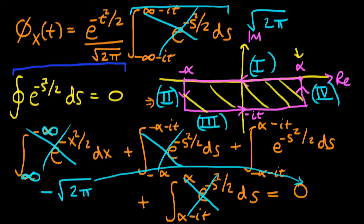After the two root 2π terms cancel, we get what we set out to prove: namely that the characteristic function of our standard normal random variable is equal to e^(−t²/2).